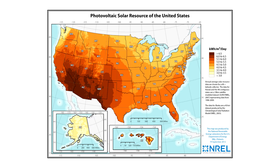Pulling up this chart from NREL, which I also include in the description, shows us the average peak solar hours of your location. This takes the low radiation levels of the morning and the high of the noon, and averages it out to one number that you can then multiply by your panel wattage to determine your total energy production for that day.